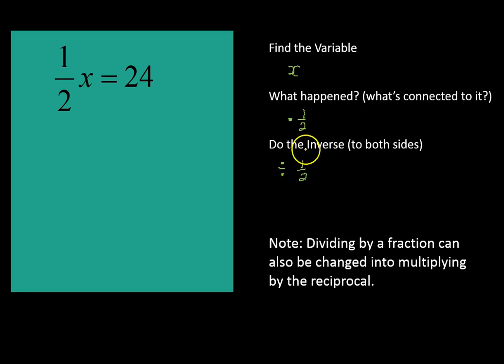So instead of dividing by 1 half, we're going to multiply times 2 over 1. It means exactly the same thing. It's just going to make our lives easier because that's how you solve division of fractions. Now, if you haven't gotten into division of fractions yet, then maybe this question is a little bit advanced, but check it out and see if it makes sense here.